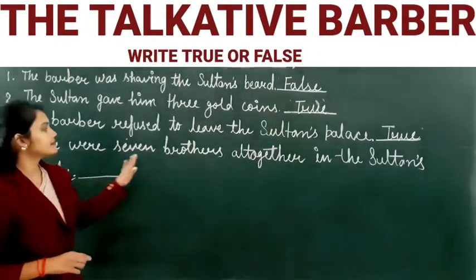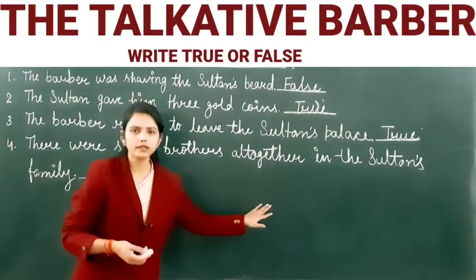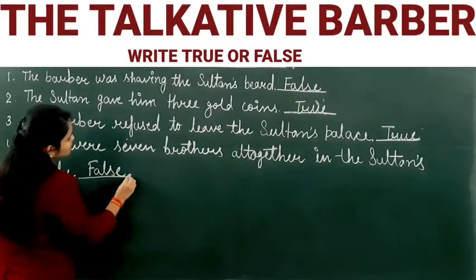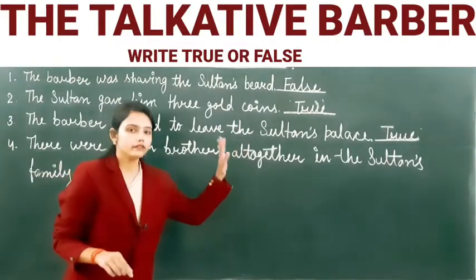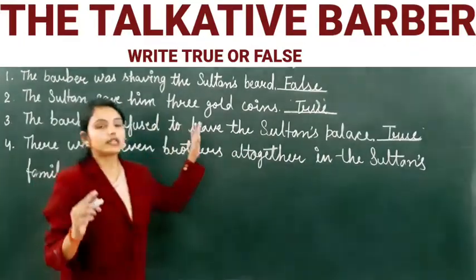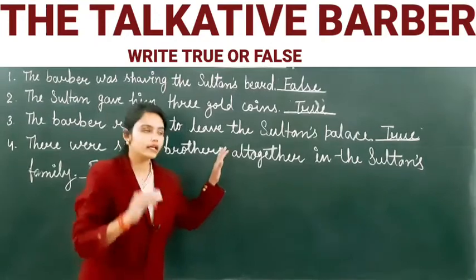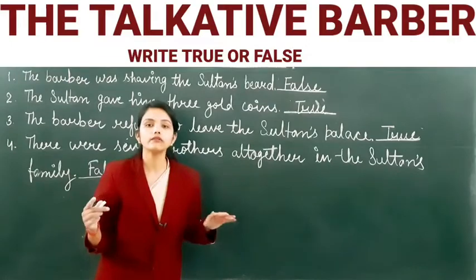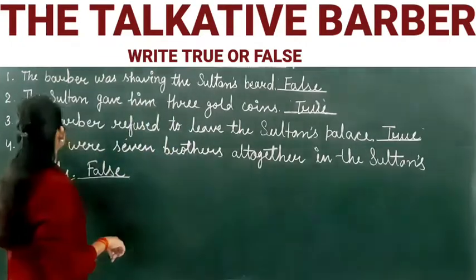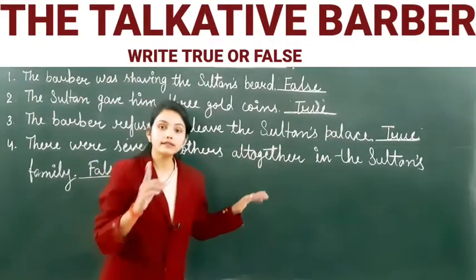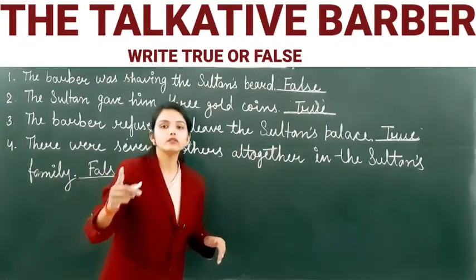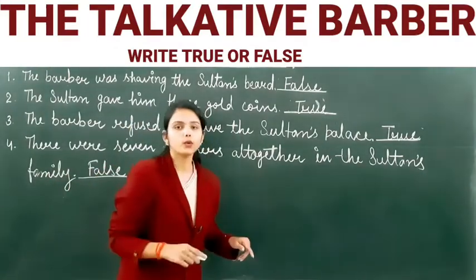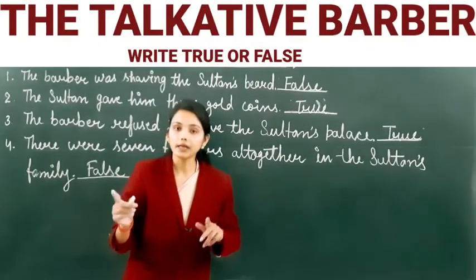Next: There were seven brothers altogether in the Sultan's family. No, that is false — there were six brothers in the barber's family.